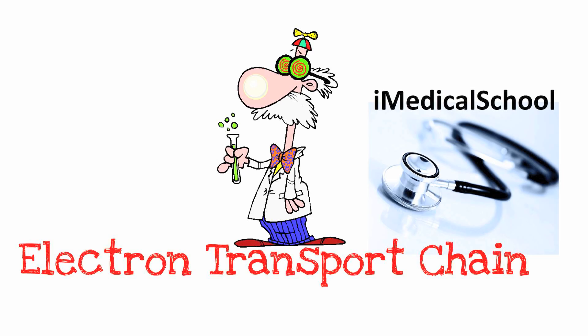Hey, this is Dr. K from Iowa Medical School, and today we're going to talk about the electron transport chain, otherwise known as the ETC. In previous videos we talked about glycolysis, pyruvate decarboxylation, and the citric acid cycle. Each of these steps was preparation for the electron transport chain with the production of NADH and FADH2. The purpose of producing NADH and FADH2 was to use these electron carriers to create ATP in a process called oxidative phosphorylation.